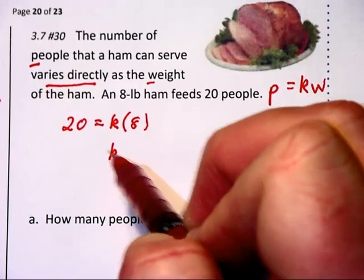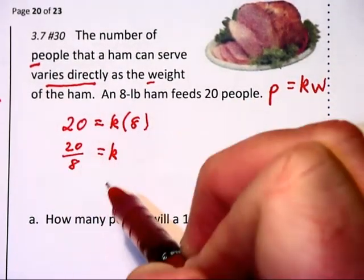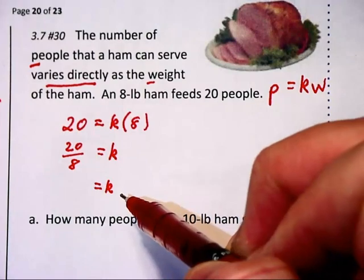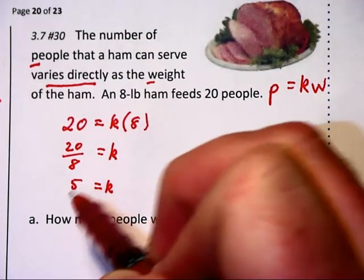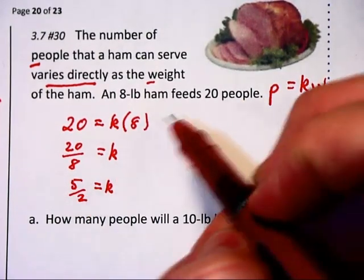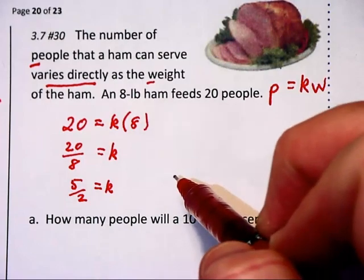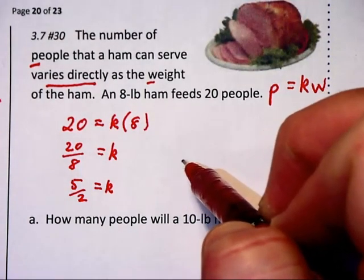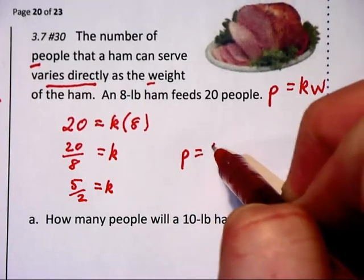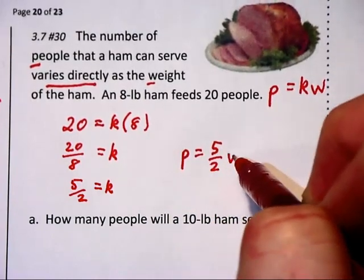Dividing by 8, we get 20 over 8. And reducing that fraction, divided by 4 over 4, we get 5 halves. So that tells us that we can write a general equation here of P is equal to 5 halves W.